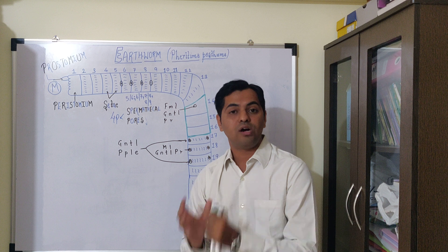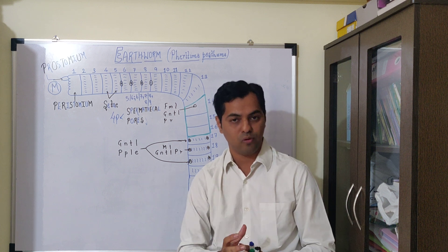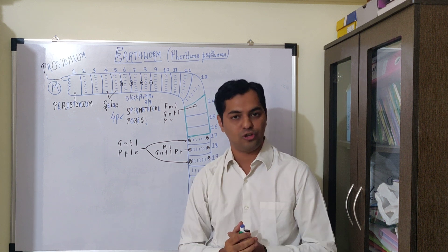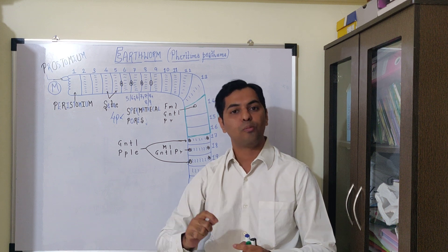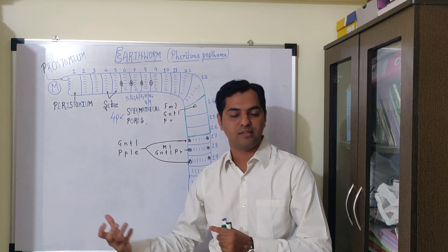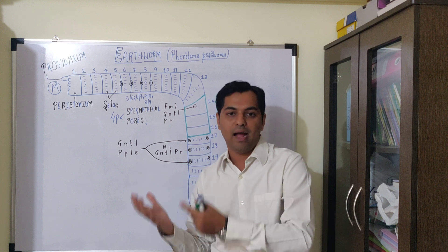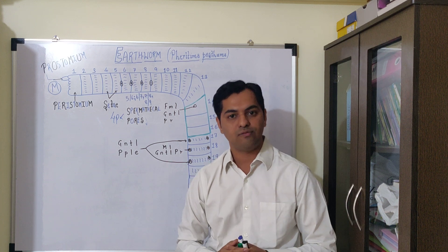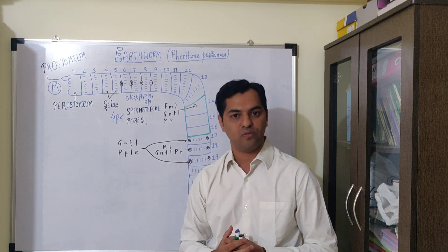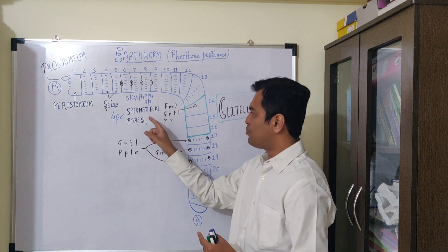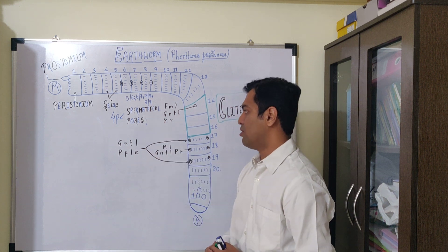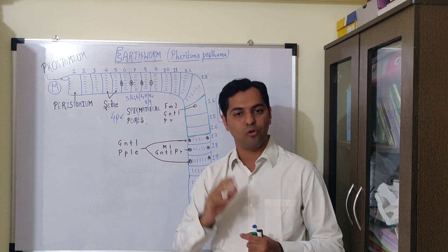Despite earthworm being bisexual or hermaphrodite, they follow cross fertilization because of protoandry. That means male sex organs mature before and female sex organs mature afterwards. Hence they follow cross fertilization. Sperms from another earthworm are stored in the spermathecal pores, total four pairs.